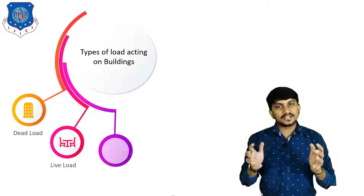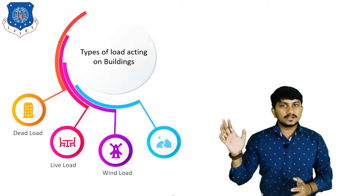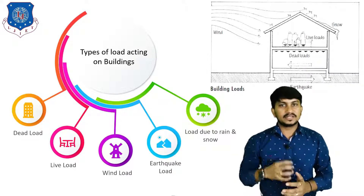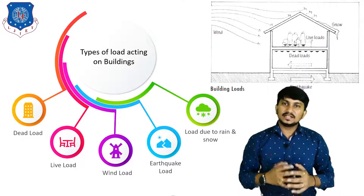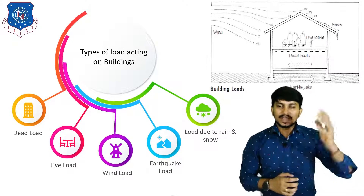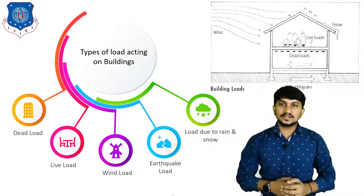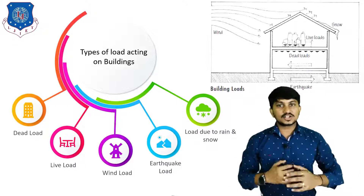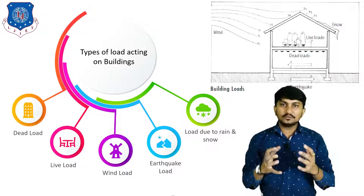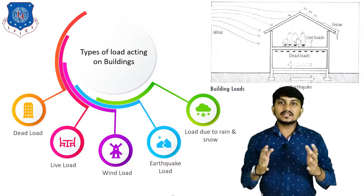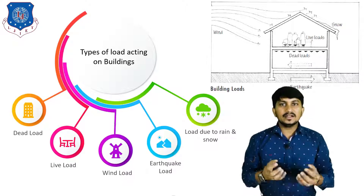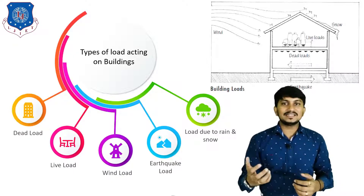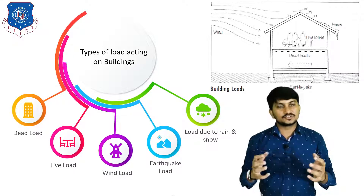There are five types of loads acting on the building: first is dead load, second is live load, third is wind load, fourth is earthquake load, and fifth is rain and snow load. You can clearly see these in the figure. For structural analysis and design, we have to calculate these loads as per Indian standard code, apply them on the model, carry out structural analysis, and then design the structural components.